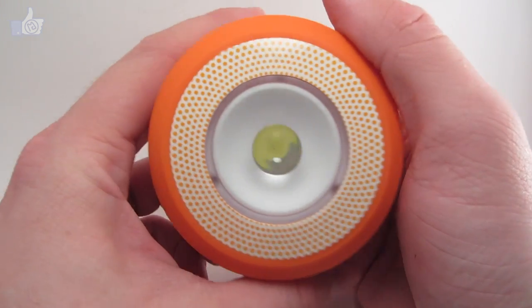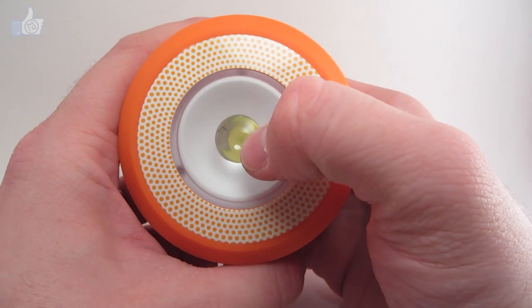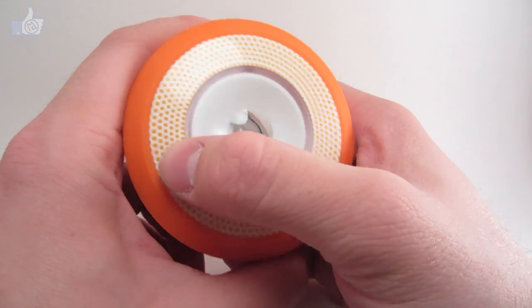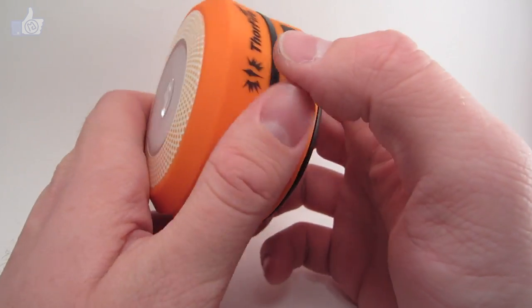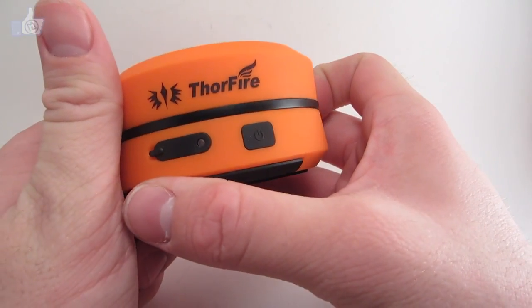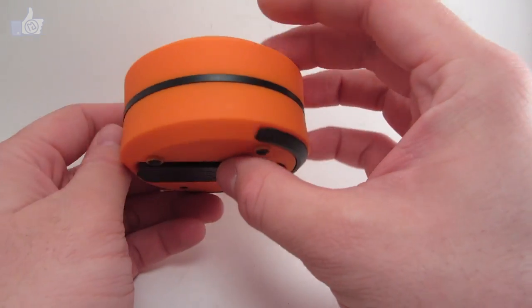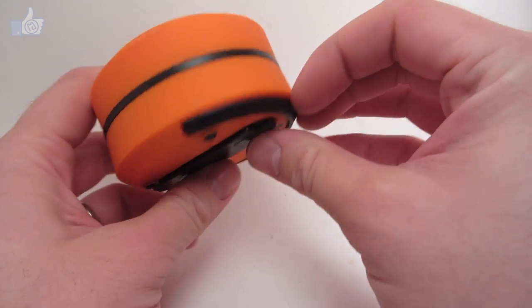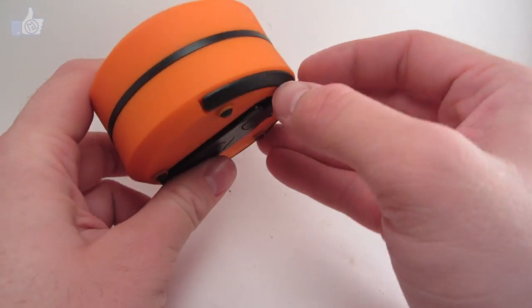Taking a look at the light here. In the top, you can see we've got this aspheric lens here to kind of focus the light and just kind of a fun pattern around it. And then, on the side, we've got the Thorfire logo there. It's just blank otherwise. You can see that we've got the crank on the bottom along with a handle here if you want to hang it up on something.